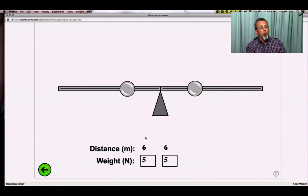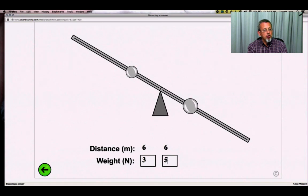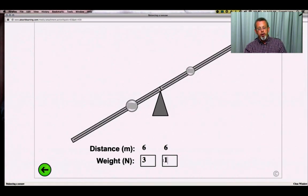But let's say we actually have something different. What if, instead of our weights being 5 and 5, what if our weights are unequal? Let's do 3 and 1. So I have 3 on the left and 1 on the right.